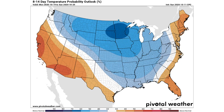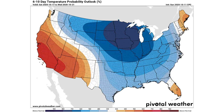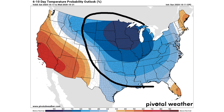Looking at the Climate Prediction Center's forecast, the 8-to-14-day outlook shows cooler-than-normal temperatures for much of the central United States. The 6-to-10-day outlook is much more defined, showing temperatures much further below average, especially for the north-central United States.